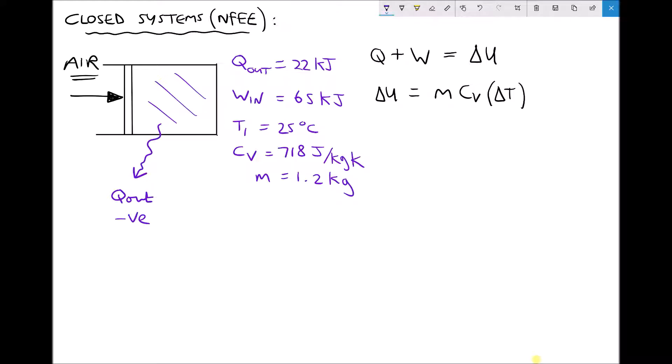If we return to our non-flow energy equation on the right hand side, we have Q plus W equals delta U. But this time Q needs to be negative - the heat energy is leaving the system. So we have minus 22 plus the work. The work's still being put into the system, so that's still positive. And that we set equal to delta U. Therefore in this case, delta U equals 43 kilojoules.